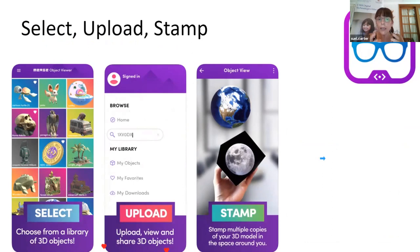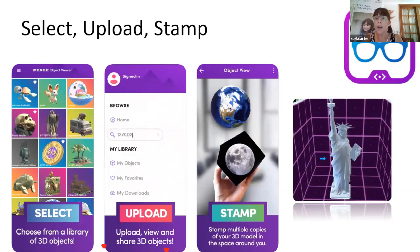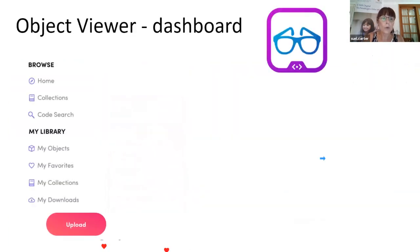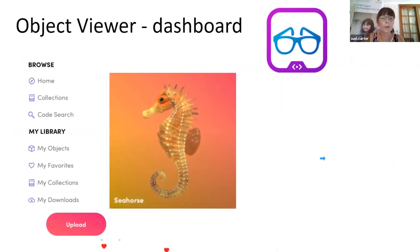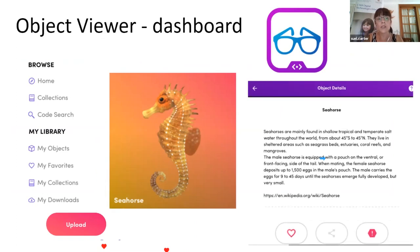What's really clever about this is the stamp tool. You have the object on the Merge Cube, click on stamp, move the Merge Cube away, and that item actually stays in the room where you are. A lovely idea is creating your own museum collection. Object Viewer also has a dashboard where you can upload or download many different objects. For example, clicking on a seahorse word brings up details from Wikipedia about that particular item. You can click on the heart to transfer it to your favourites, so at any time you can access items you've stamped.